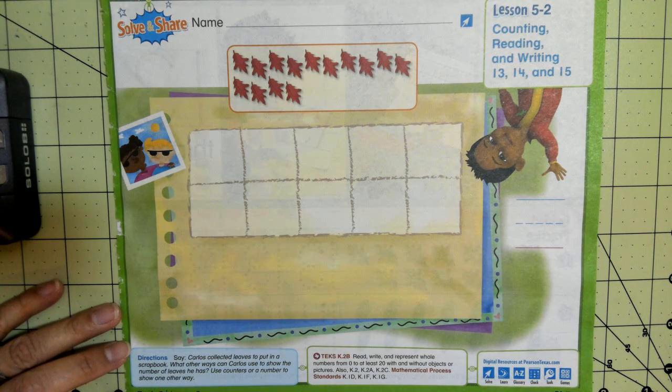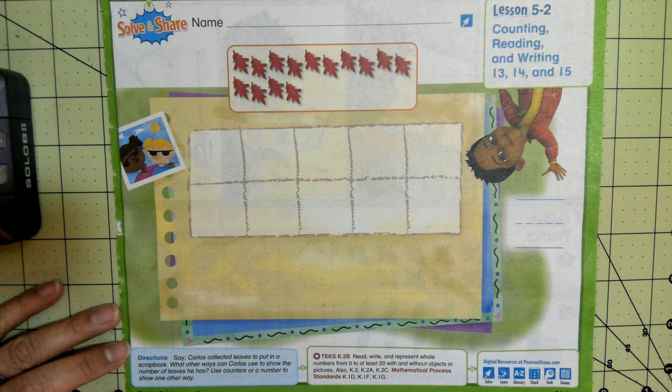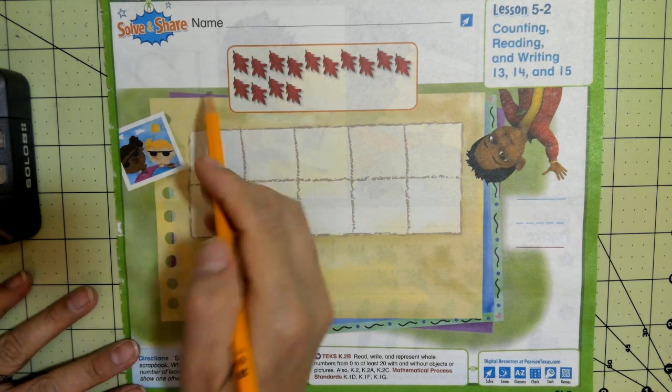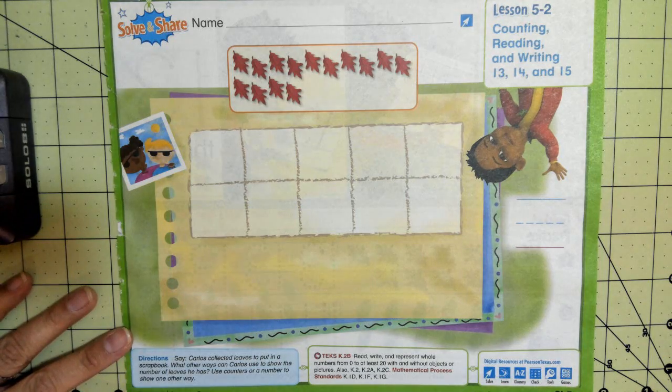Okay, so Carlos collected leaves to put in a scrapbook. What other ways can Carlos use to show the number of leaves he has? So we're going to use counters. So let's count to see how many leaves he collected.